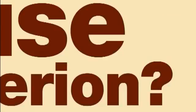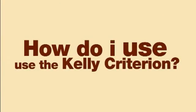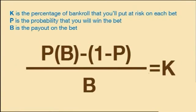How do I use the Kelly Criterion? This chart shows the Kelly formula. P is the probability that you will win the bet. B is the payout on the bet. K is the percentage of bankroll that you'll put at risk on each bet.